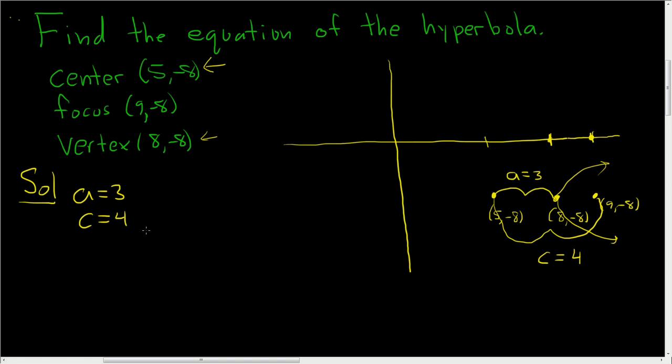We just need to find b, and then we'll finish, because the formula's going to have an a squared and a b squared in it. For a hyperbola, the formula is c squared - it's the opposite, it's a plus.